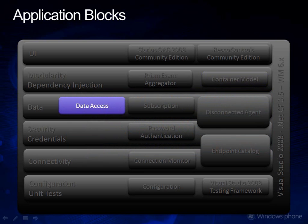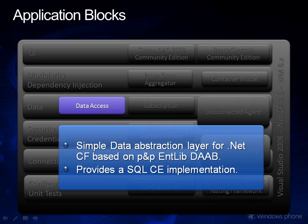The data access block is a typical data abstraction layer. It was based on the Enterprise Library data access block and you can use it as a basic database abstraction for your application. We're providing a SQL Compact Edition implementation as part of the block, and it's actually used by some of the blocks like the disconnected agent for data persistence.